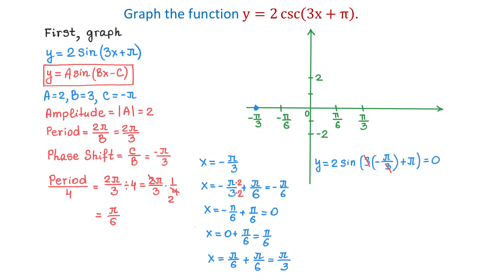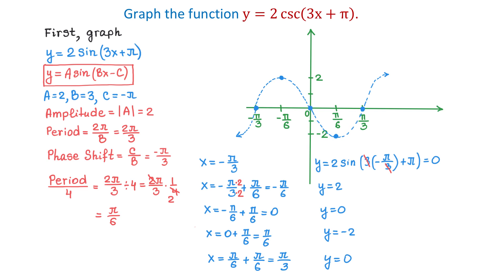Because our sine function has a positive 2 in front, from this point the graph will go up to positive 2, then down to 0, then down to negative 2, and then back to 0. So the rest of the y-values for these 5 points will be y equals 2, y equals 0, y equals negative 2, and y equals 0. I will plot all these 5 points and connect them to form the graph. Because the graph of this sine function is just a helping graph for the cosecant function, we will make this graph dotted. Through the x-intercepts of the sine function, we will draw vertical asymptotes for the cosecant function.